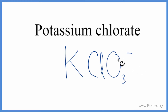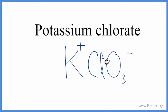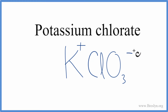Going back to the periodic table, we can see that potassium is in group 1, so it has a +1 charge. We usually write just a plus. These charges need to equal out to 0 — we need to have a net charge of 0. We have a plus and a minus, and that adds up to 0. So this is the formula for potassium chlorate.